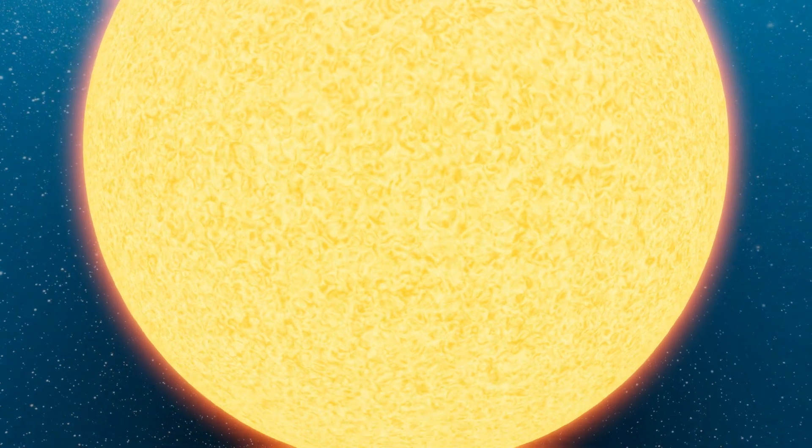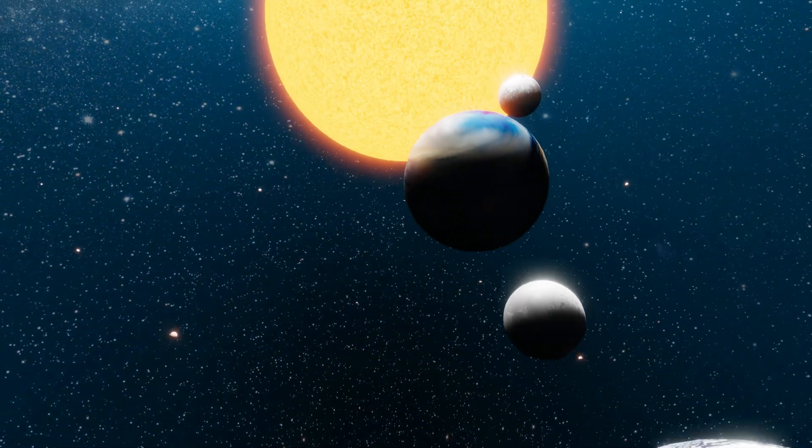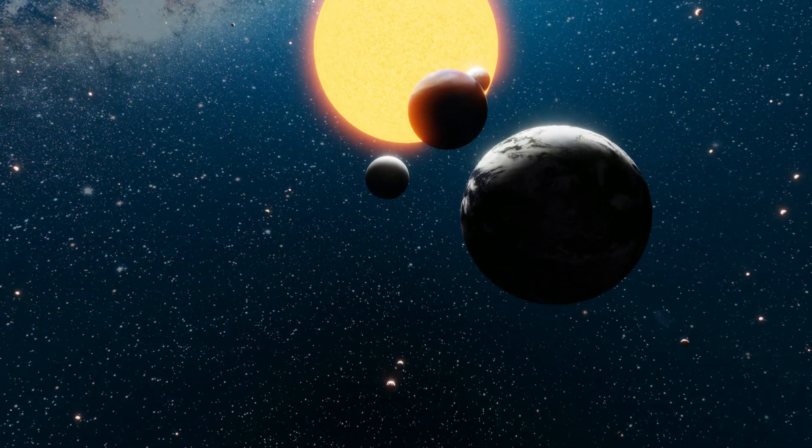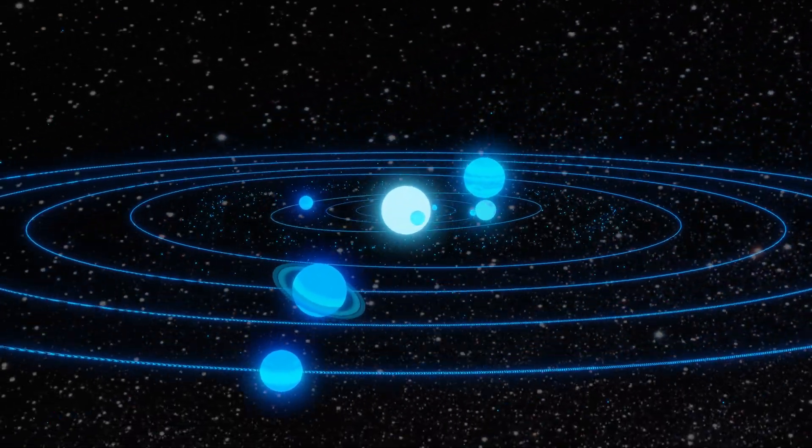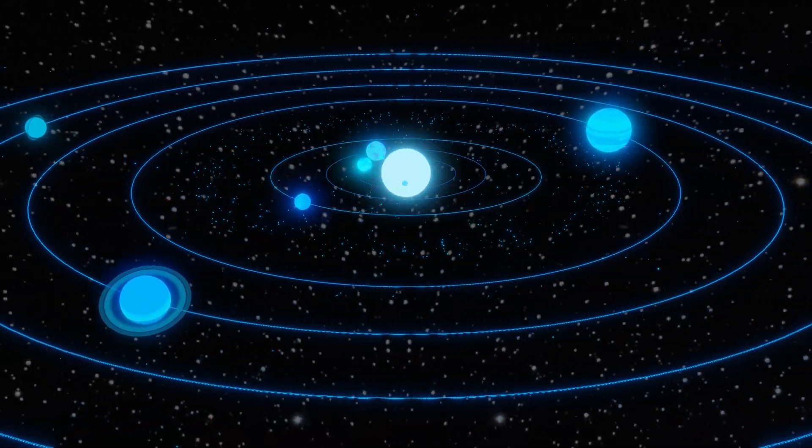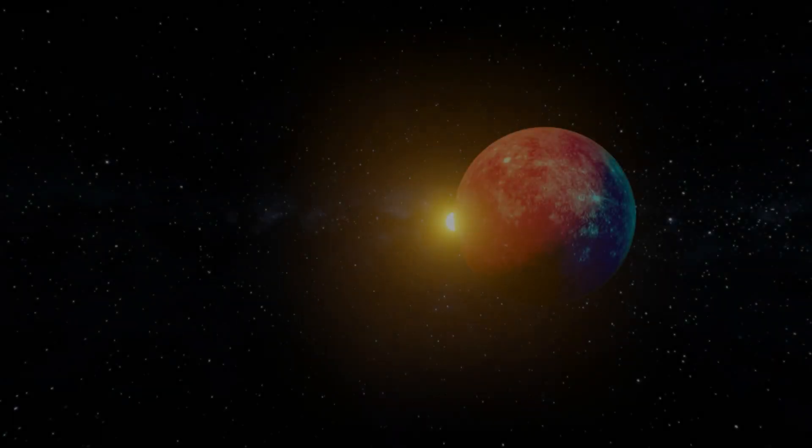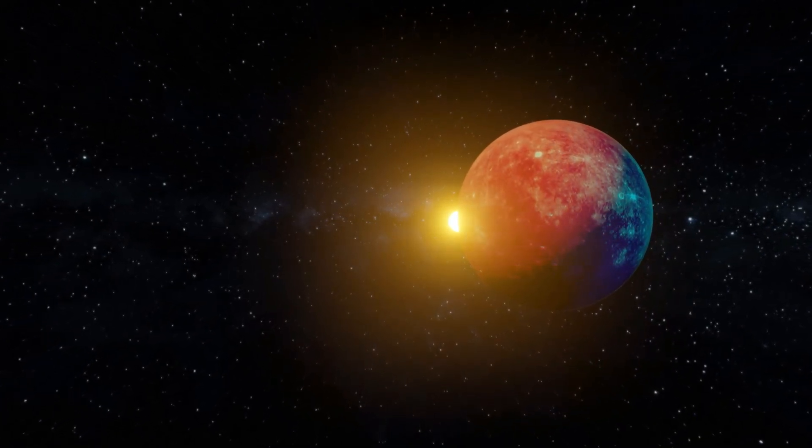This scorching hellscape orbits its star at an astonishingly close distance, completing an orbit in a mere six hours. To put that in perspective, Earth takes 365 days to orbit the Sun.